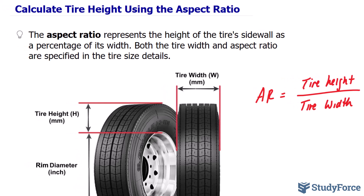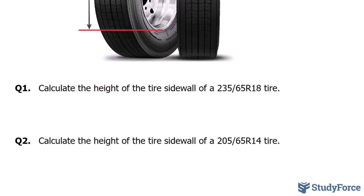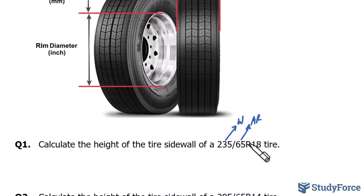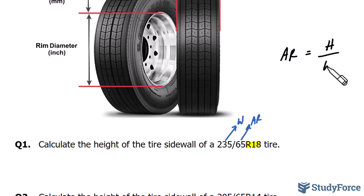Let's take a look at an example. Calculate the height of a tire's sidewall of a 235-65-R18. The first number represents the width, and the second represents the aspect ratio. The letter R represents radial, and 18 represents the rim diameter. Note that those two things will not play a role in the calculation. So again, the aspect ratio is equal to the height of the tire divided by the width of the tire, where I've represented height as H and width as W.